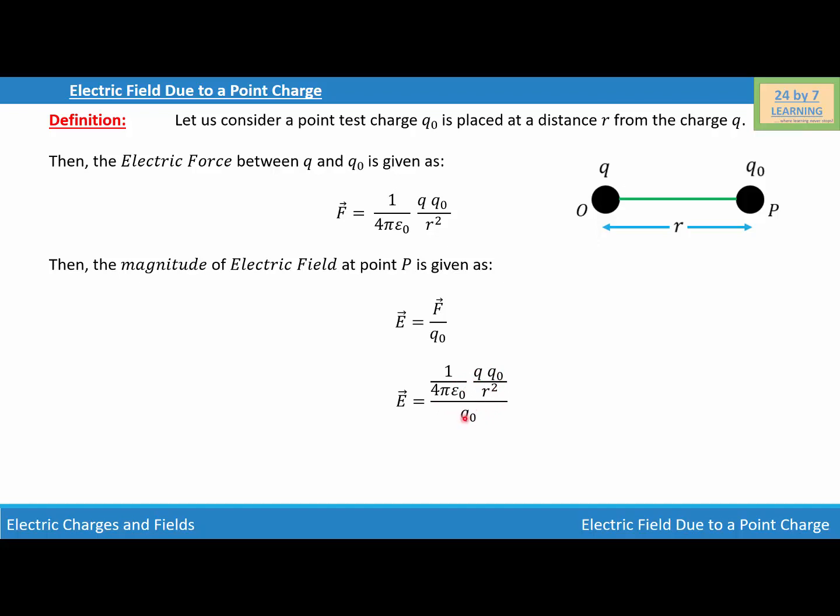Q₀ is common so I can cancel Q₀ out. This gives E = 1/(4πε₀) × Q/R².